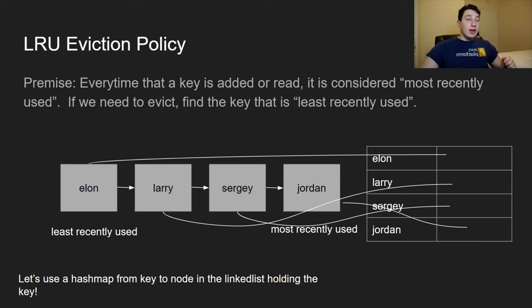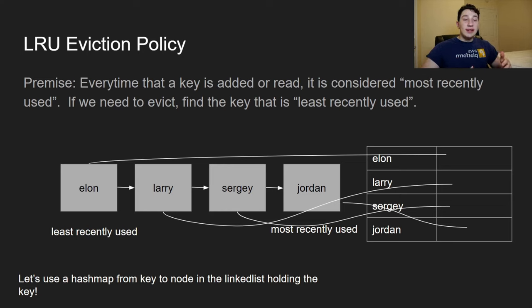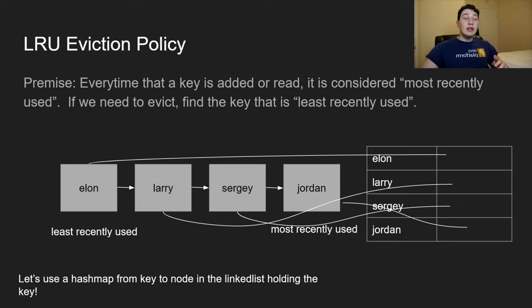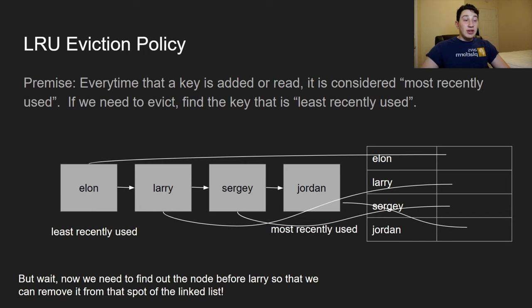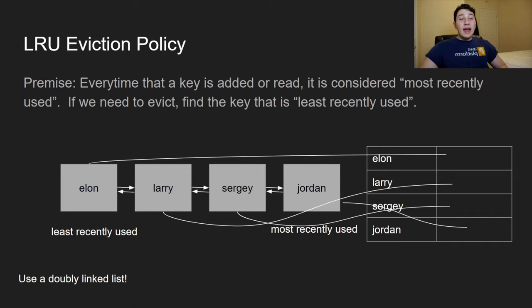With the HashMap we can find larry's node, but we also need to delete it from its current position. That requires access to the previous node (elon), so we can update elon's next pointer. A singly linked list won't work here — from larry we can only get to sergey, not back to elon. So we need a doubly linked list to be able to update both previous and next pointers.